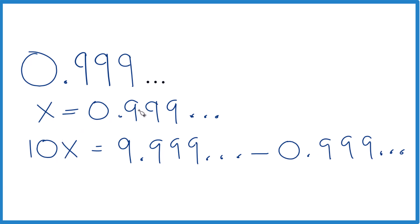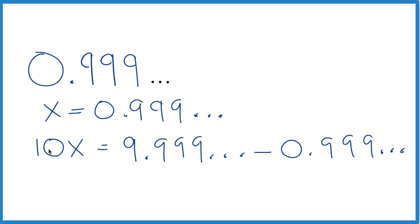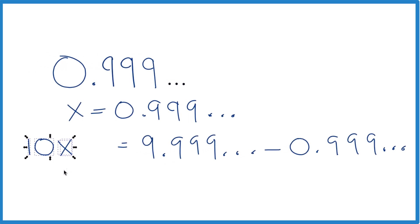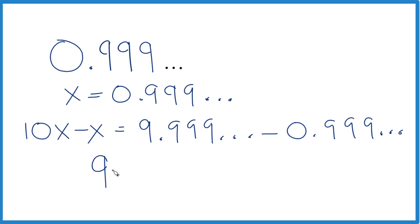Here's the cool part. 0.999 repeating equals x. So we could just say 10x minus x. Let's move this over like that. And now 10x minus x, that gives us 9x.